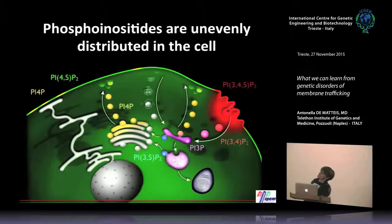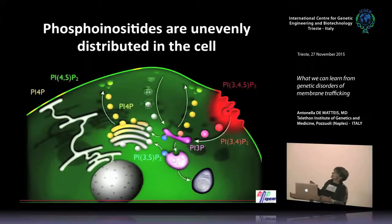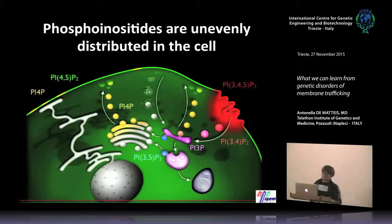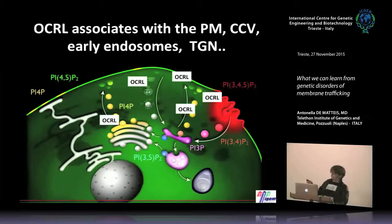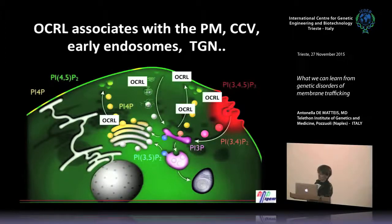This picture illustrates what I was describing. PI(4,5)P2 in green is present mainly in the plasma membrane. PI3P is present in the endocytic system, together with the bisphosphorylated species PI(3,5)P2 and PI(3,4)P2. PI4P is mainly at the Golgi. OCRL is present in many different compartments — the plasma membrane, the endosomal system, and some of it also in the Golgi complex.